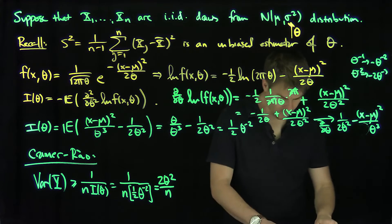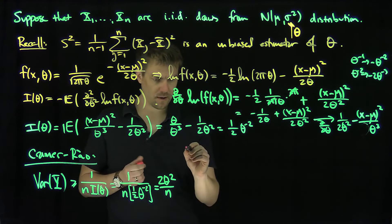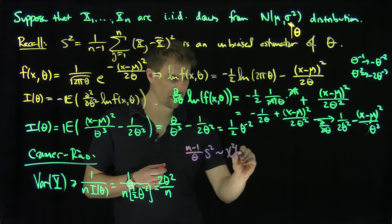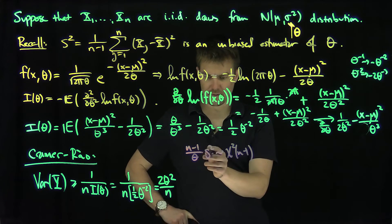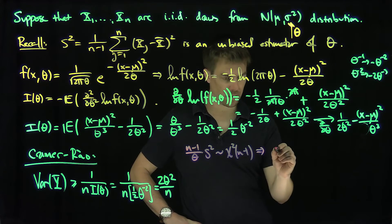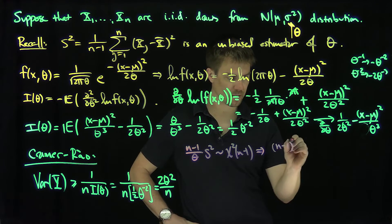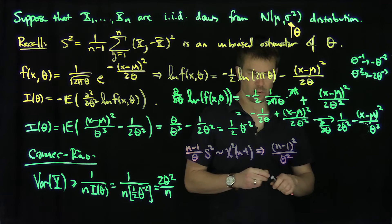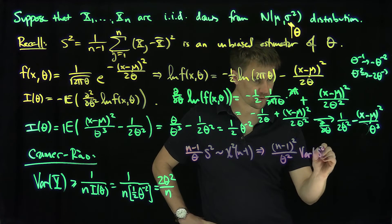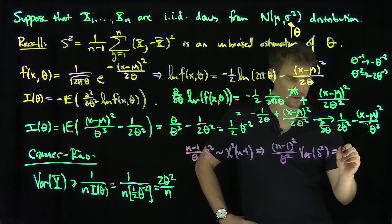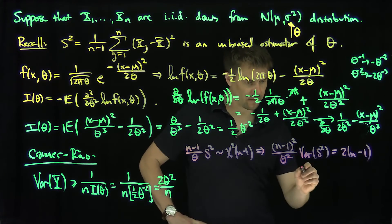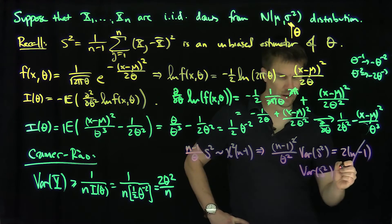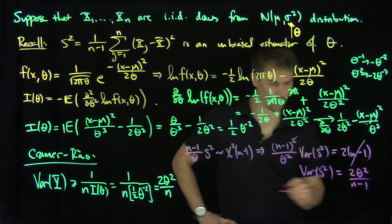Recall that (n−1)S²/θ is chi-squared with n−1 degrees of freedom. Therefore (n−1)²/θ² times Var(S²) equals 2(n−1), since the variance of a chi-squared(n−1) is 2(n−1). Solving, the variance of S² equals 2θ²/(n−1).